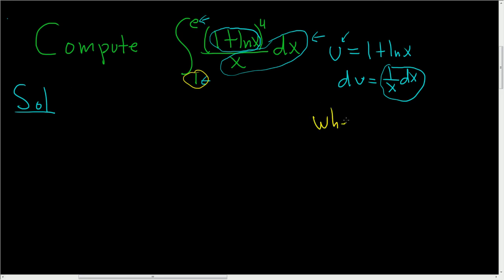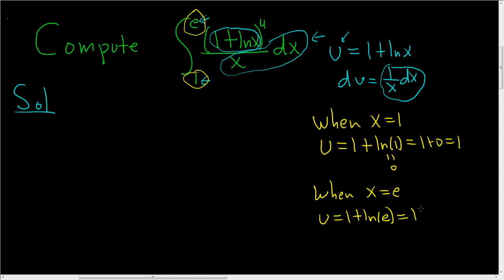When x is equal to 1, let's work out the u. So u is equal to 1 plus the natural log of 1, and the natural log of 1 is 0. So this is 1 plus 0, which is 1. And then now the upper limit of integration. When x is equal to e, we end up with u equals 1 plus the natural log of e. And that's going to be 1 plus 1, which is 2.